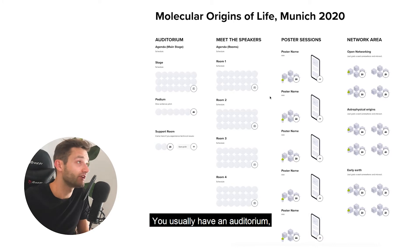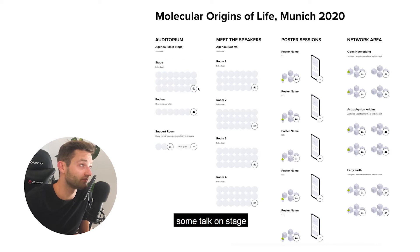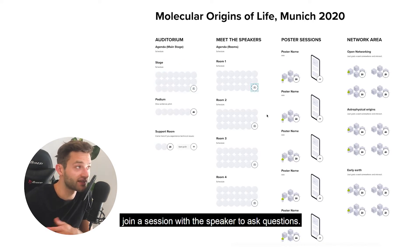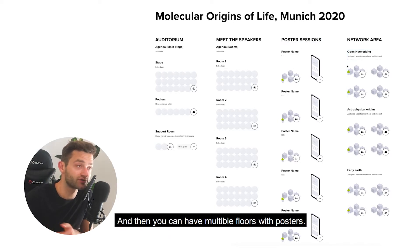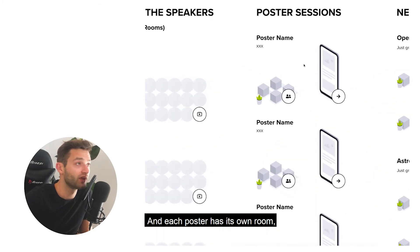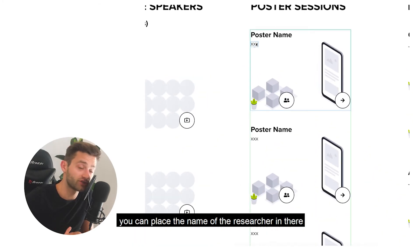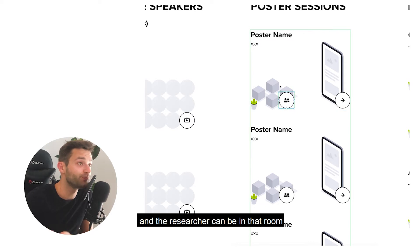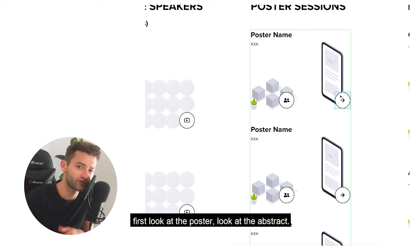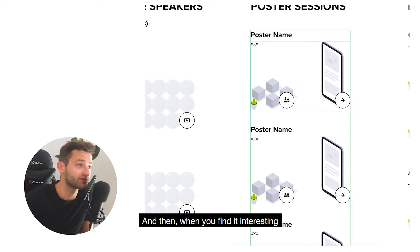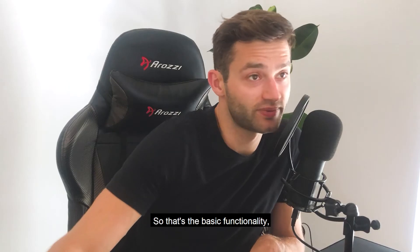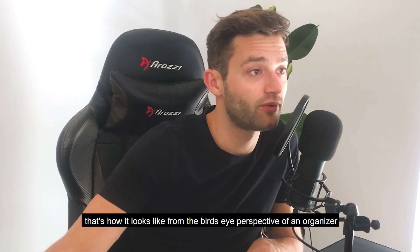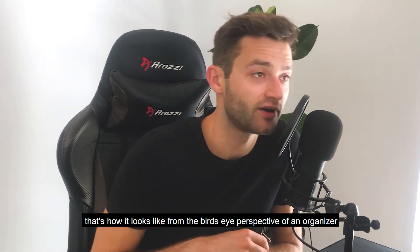You usually have an auditorium. You have a meet-the-speakers floor where people can, after they watched some talk on stage, join a session with the speaker and ask questions. And then you can have multiple floors with posters and each poster has its own room. You can place the name of the researcher in there and the researcher can be in that room. Without even joining the room, you could first look at the poster, look at the abstract. And then when you find it interesting, you just join and talk with the researcher. That's the basic functionality.